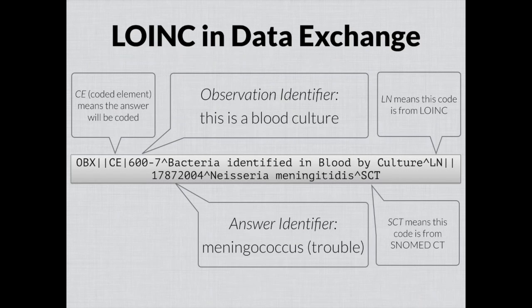LOINC provides codes for questions. How does that translate into electronic data exchange between systems? The prevailing pattern for sending electronic healthcare data uses message standards such as those produced by HL7. HL7 version 2 has been around and is probably the prevailing standard for laboratory data communicated from a laboratory information system. LOINC was designed to fit perfectly in this message structure context. I've pulled out a sample of reporting a result in an OBX segment — OBX meaning observation — to show where it fits. HL7 is kind of like a database; the fields are delimited by vertical bars.